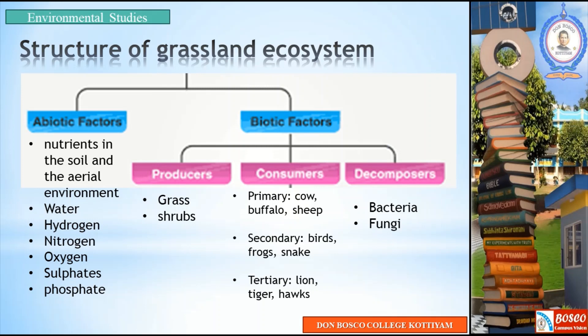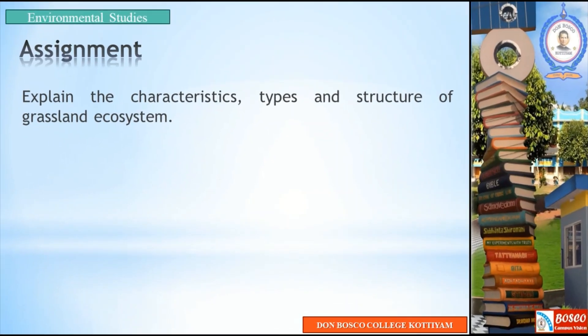The grassland ecosystem is comparatively similar to the forest ecosystem, but instead of high trees and shrubs, it has green grass. The structure of the grassland ecosystem is almost similar to the forest ecosystem. Thank you for listening. Have a nice day.